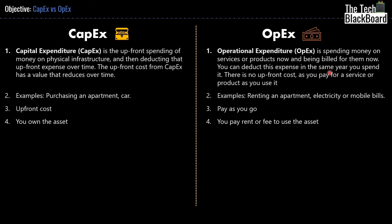The official definition of OpEx: Operational Cost is spending money on services and products now and being billed for them now. You deduct this expense in the same year you spend it — there is no upfront cost; you pay for a service or product as you use it, and you adjust this cost in the same month you incur it. CapEx is like purchasing an apartment or a car; OpEx is more like renting an apartment or paying electricity and mobile bills monthly. In CapEx you own the asset, whereas in OpEx you don't own any asset — you pay rent to use it, and when you stop paying, you simply delete the resource and your usage ends there.